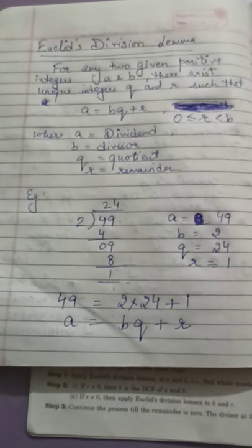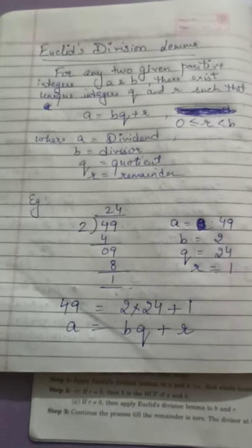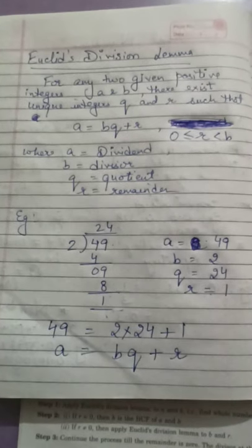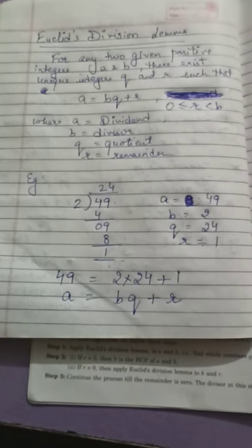Good morning, let's learn Euclid's Division Lemma now. For any two given positive integers A and B, there exist unique integers Q and R such that A equals BQ plus R, where R is greater than or equal to 0 but less than B.